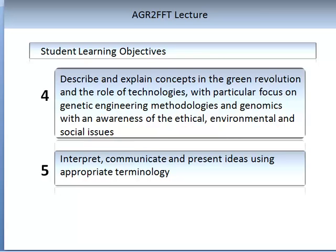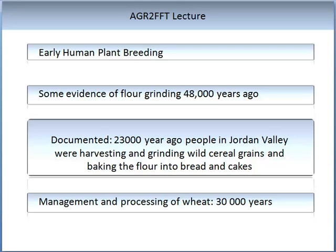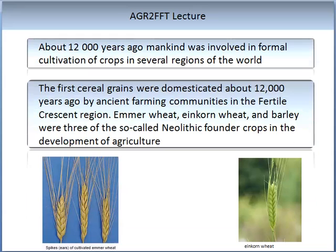The history of plant breeding is indeed an interesting one. Mankind has been plant breeding for some time. There is some evidence dating back 48,000 years ago for flour grinding. 23,000 years ago people in Jordan Valley were harvesting and grinding wild cereals and baking the flour into breads and cakes. It is estimated that the management and processing of wheat first started about 30,000 years ago. About 12,000 years ago, mankind was involved in formal cultivation of crops in several regions of the world. The first cereal grains were domesticated about 12,000 years ago by ancient farmer communities in what is known as the Fertile Crescent region. Einkorn wheat and barley were the three so-called Neolithic founder crops in the development of agriculture.